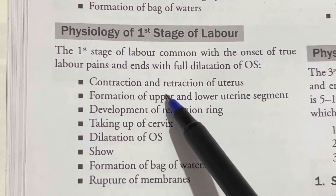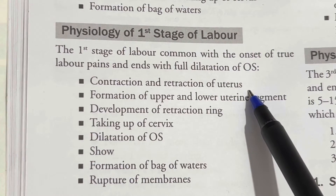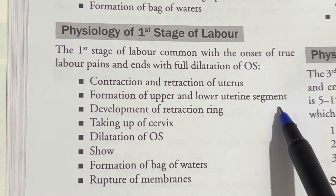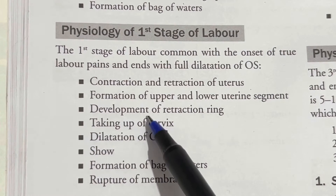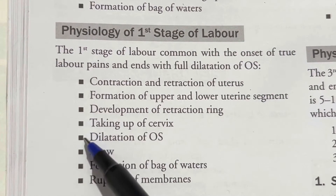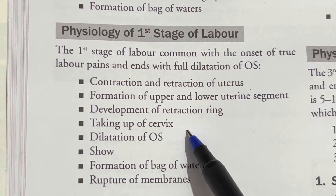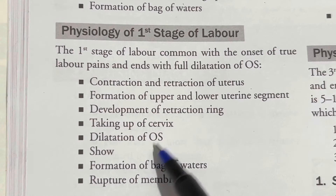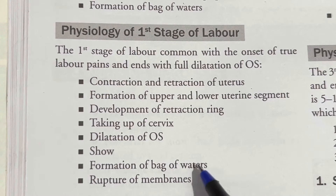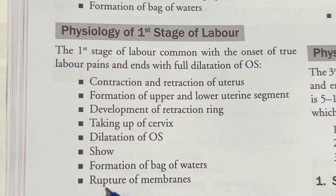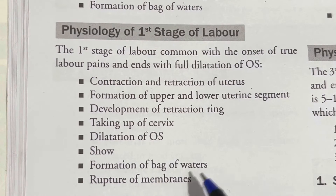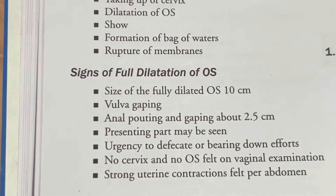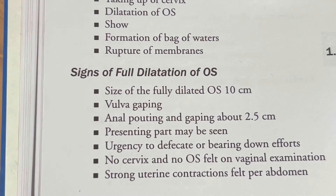The key physiological events of the first stage include: contraction and retraction of the uterus, formation of the upper and lower uterine segment, development of the retraction ring, taking up of the cervix, dilatation of the os, show, formation of the bag of waters, and rupture of membranes. After these events, the cervix becomes fully dilated.